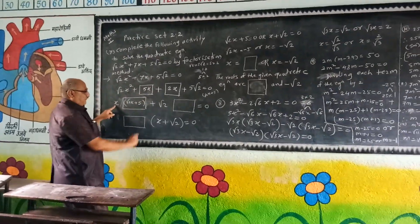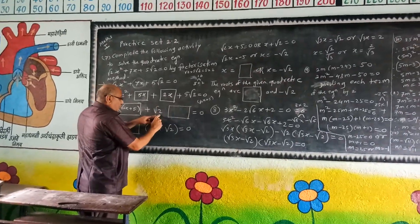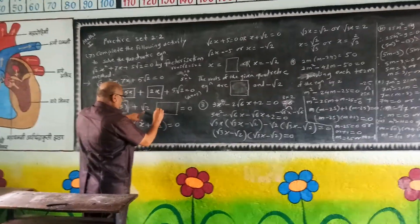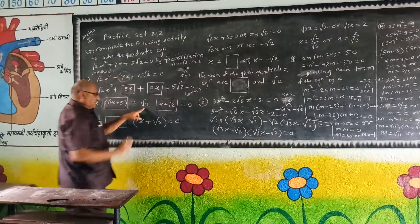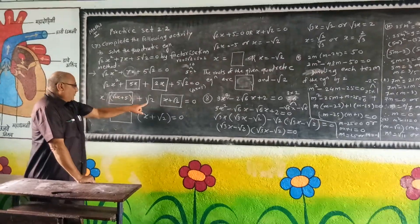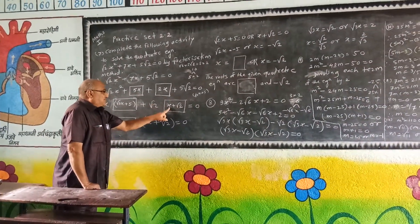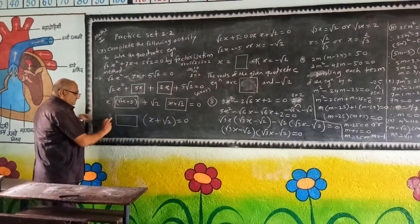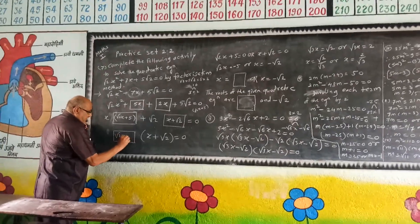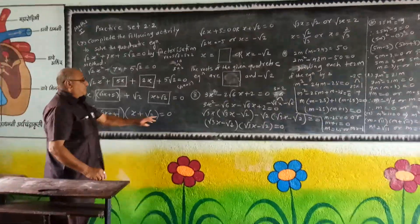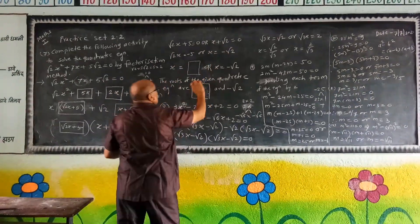Taking x common gives root 2 x plus 5. Then root 2 x plus 5 is also common with root 2. Splitting the bracket: x plus root 2. So root 2 into root 2 gives root 2 x into x plus root 2, and also root 2 x plus 5.